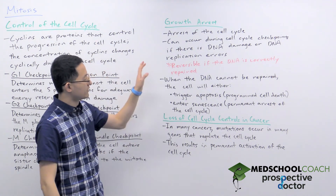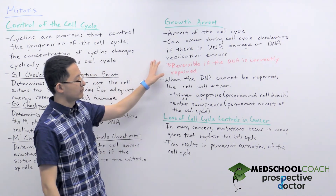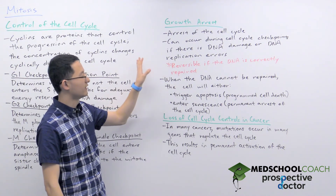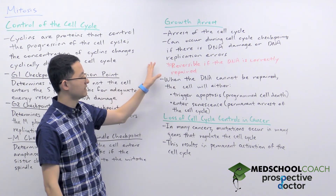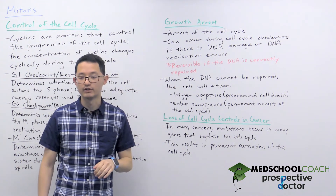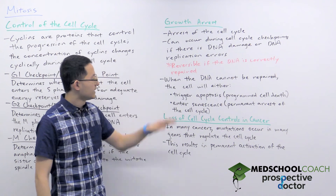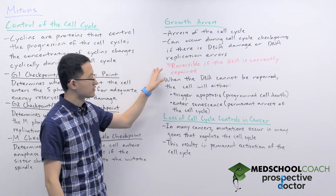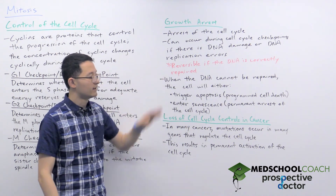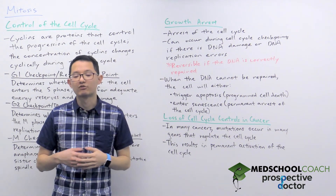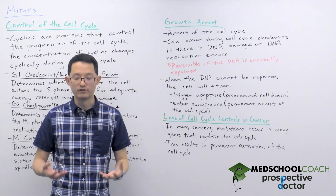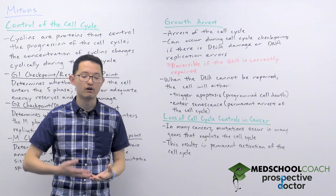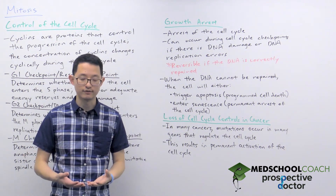The first thing the cell is going to try to do is repair the DNA damage or the DNA replication error. If the error or DNA damage is correctly repaired, then the growth arrest is reversed and the cell will continue along the cell cycle.